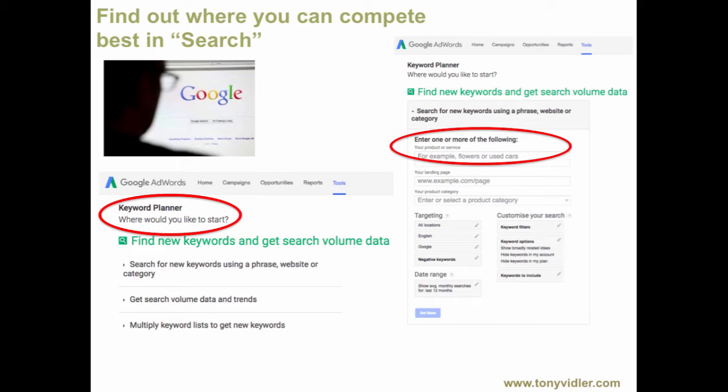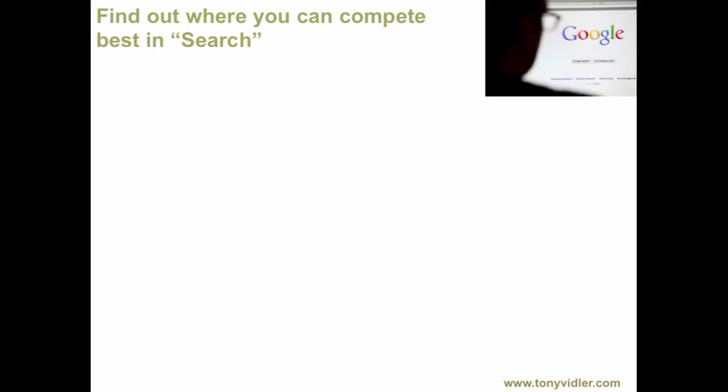You can even go a step further with some extra software and start targeting competitors' keywords to find out what they're using. But for the moment, we're talking about just the Google AdWords Keyword Planner tool. You go in there and put in the terms, phrases, or keywords that you think you're going to compete in, and then you can start to refine it.